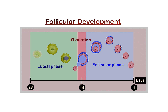Next is the ovulatory phase. High estrogen stimulates the pituitary gland to decrease FSH secretion and increase luteinizing hormone (LH) secretion. A high level of LH occurs around day 12 of the menstrual cycle, called the LH surge. This LH surge is responsible for ovulation — the release of the secondary oocyte from the Graafian follicle. This oocyte is arrested in the metaphase stage of meiosis 2 until fertilization.